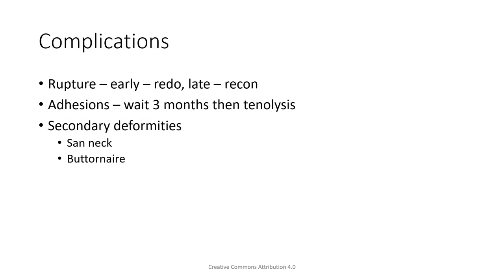Complications include rupture - if it's early, you redo it; if the rupture is late, then we consider reconstruction. Adhesions are generally because of extrinsic healing; they're very common and the question is how bad it is in terms of functional recovery. You can do tenolysis - I generally wait three months prior to doing tenolysis of the extensor tendons. You must also understand there are secondary deformities that result from primary tendon injury. For example, the mallet finger can produce a swan neck deformity. Understanding how this occurs is important in your assessment and treatment.